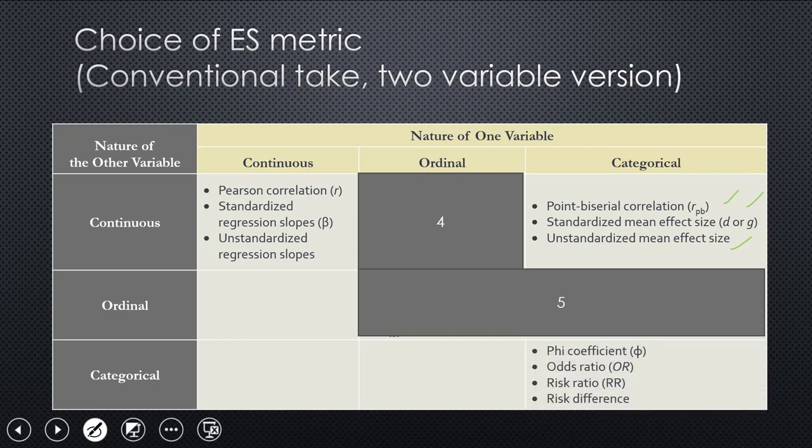If you had both categorical variables, you could use a phi coefficient, which is the version of the correlation that is analogous to a Pearson correlation. And then the odds ratio is very widely used, as is the risk ratio. Sometimes you see the risk difference. I'm not going to go into any of these in great detail today.